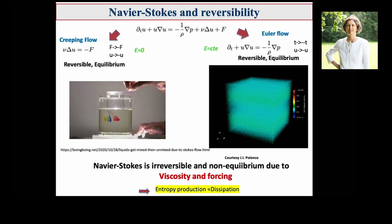In between, if I consider the full Navier-Stokes equation and apply the time-reversal transformation, the Euler part is invariant, but the viscous term is not — it acquires a minus sign. So even if the forcing is reversible, the viscosity breaks the time reversal symmetry. I will say that Navier-Stokes is irreversible and is in non-equilibrium due to viscosity and forcing. The presence of the viscous term makes the dynamics irreversible, leading to entropy production and dissipation.